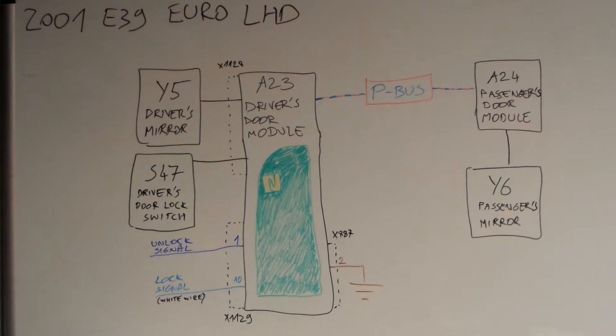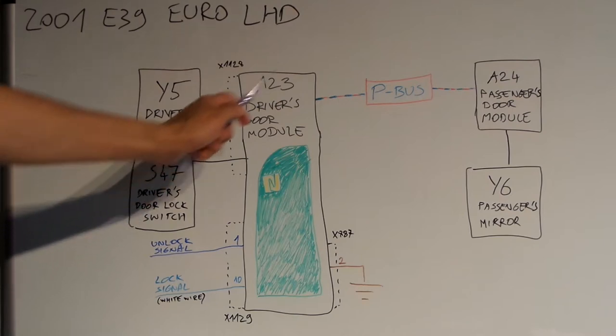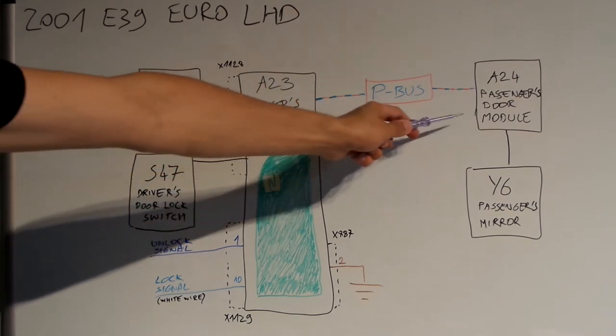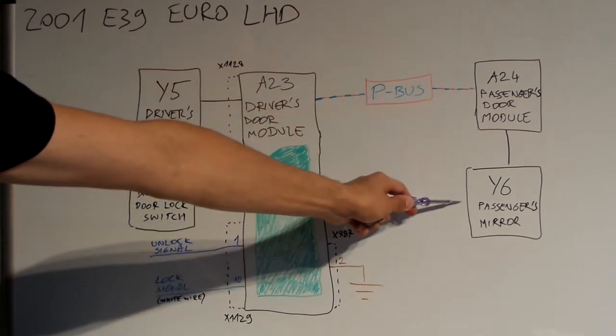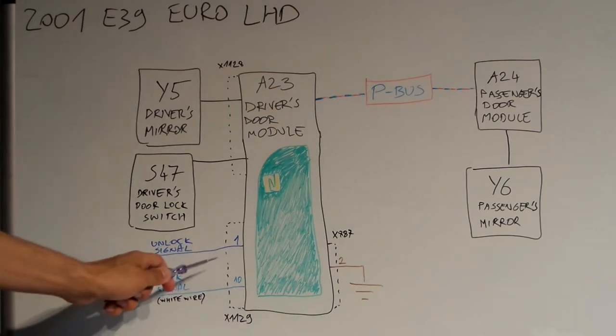So let's check how mirrors are operated. When we press the button on the switch the signal goes directly to the driver's door mirror and then over the bus data network to the passenger's door module which operates that mirror. We also get a signal when we lock and unlock the car and we're going to use that to our advantage.